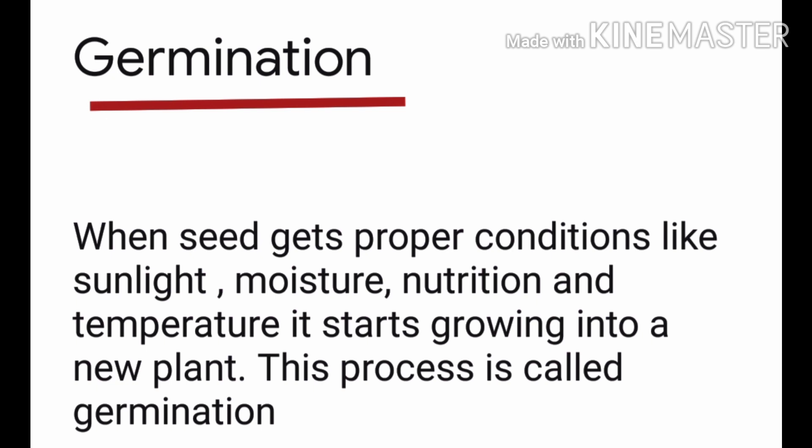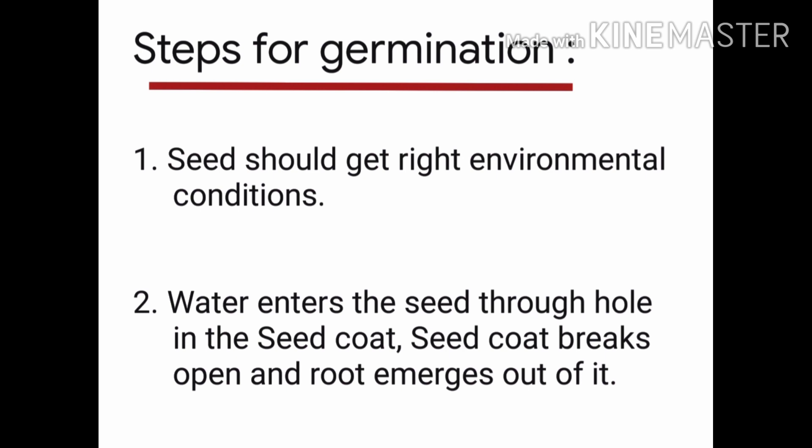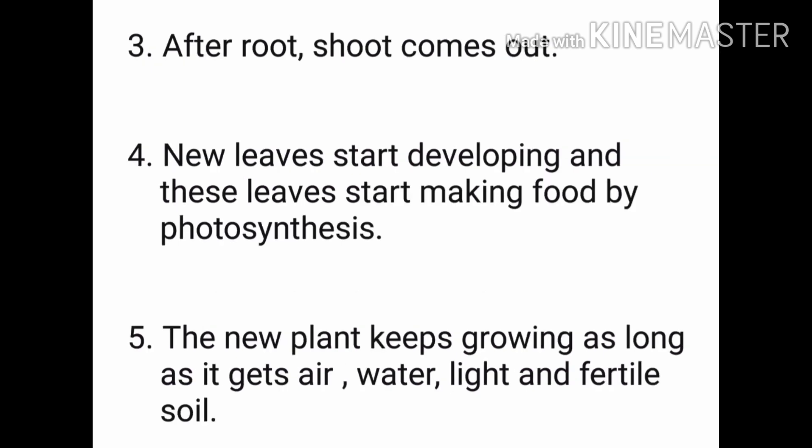In germination we learned five steps. First, the seed should get the right environmental conditions to grow. Second, after water enters the seed through the hole in the seed coat, the seed coat breaks open and the root emerges. Third, after roots, the shoot comes out.